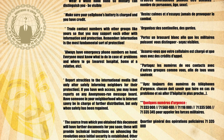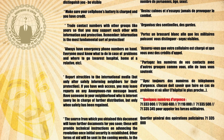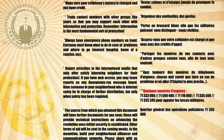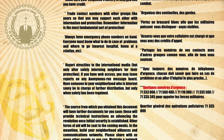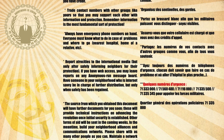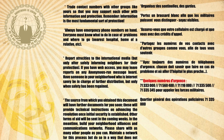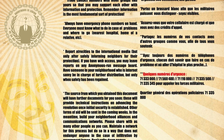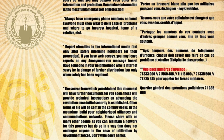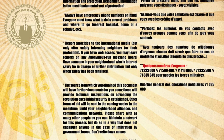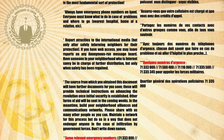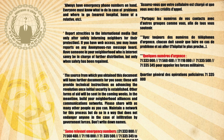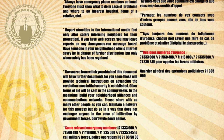The source from which you obtained this document will have further documents for you soon. These will provide technical instructions on advancing the revolution once initial security is established. Other forms of aid will be sent in the coming weeks. In the meantime, build your neighborhood alliances and communications networks. Please share with as many other people as you can. Maintain a network for this process but do so in a way that does not endanger anyone in the case of infiltration by government forces. Don't write down names.